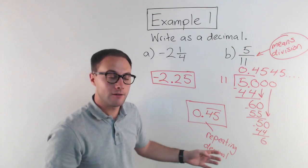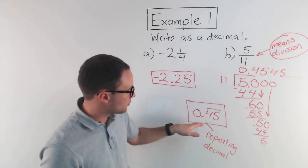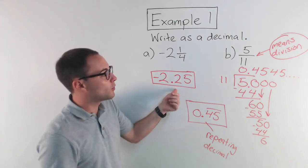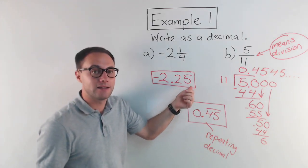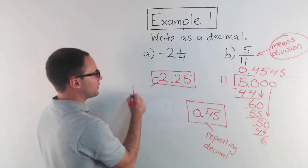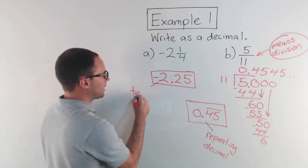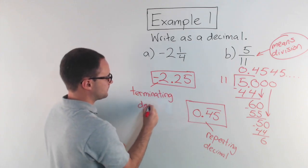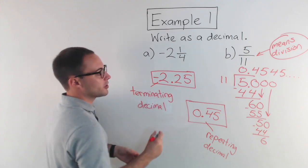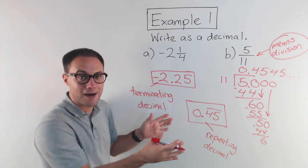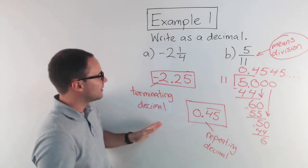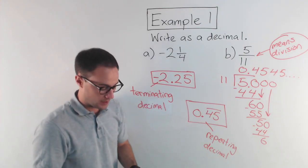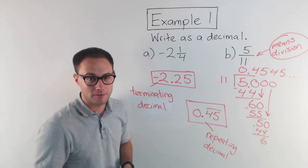The four and the five repeat over and over again — 0.454545 on and on. The previous example, negative 2.25, was not repeating — it ended. So we call that a terminating decimal. Make sure you know the difference between the two: terminating decimals stop and end, repeating decimals repeat on and on forever.